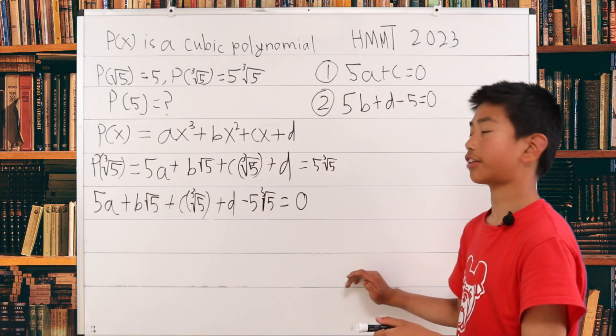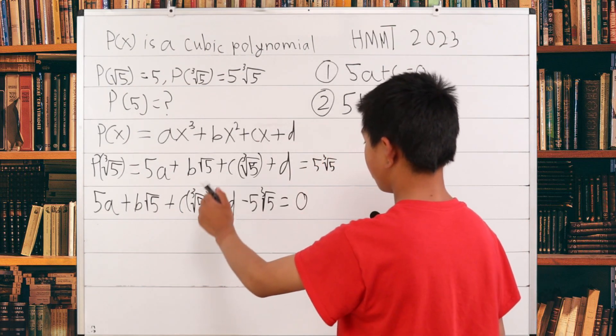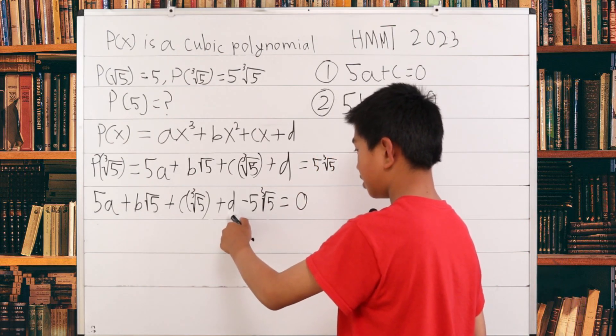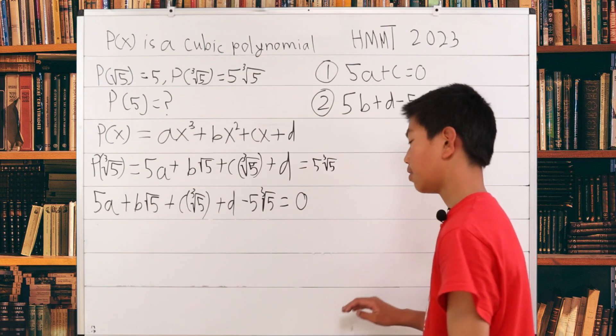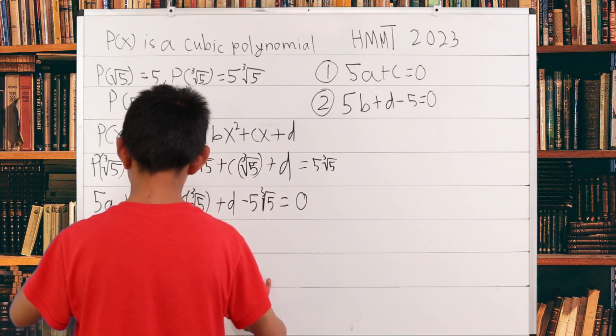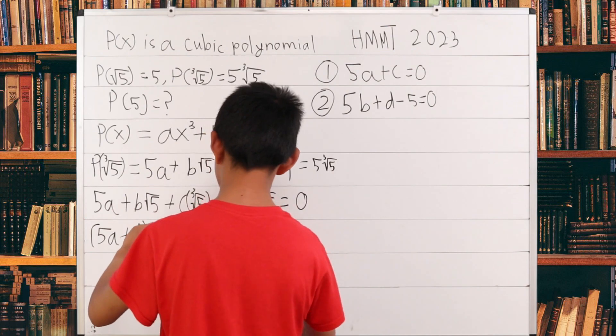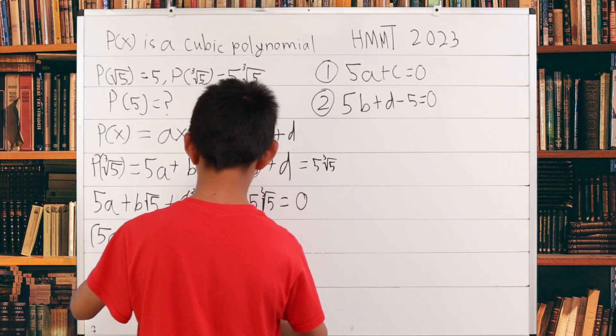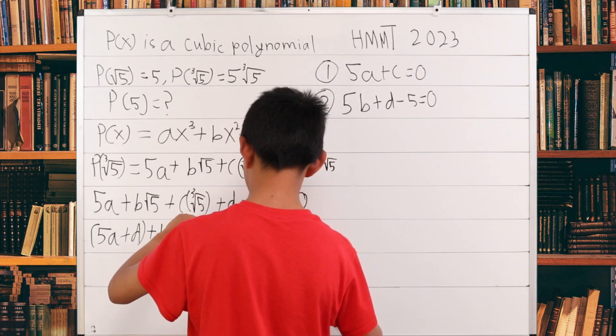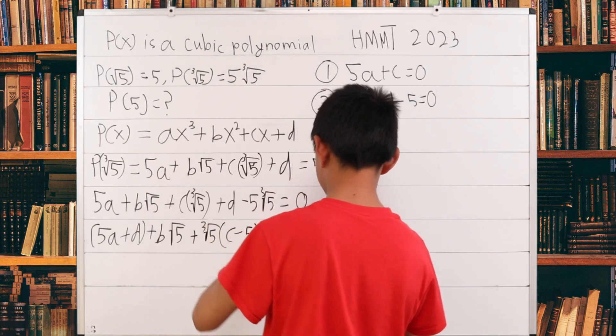Once again, we can factor out things. That has a square root, we can leave that hanging. We factor out these two because they have a common factor of ∛5 and add the d and 5a because that's what's left over. What we have is (5a + d) + b∛5 + ∛5(c - 5) = 0.